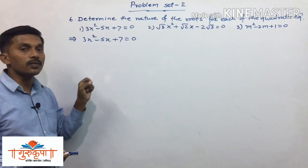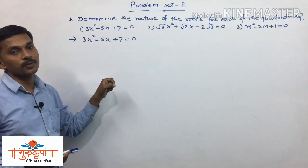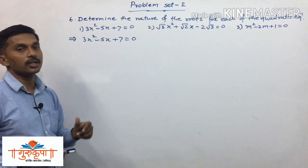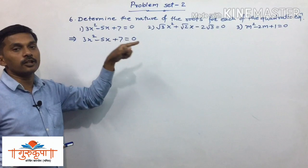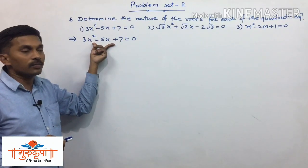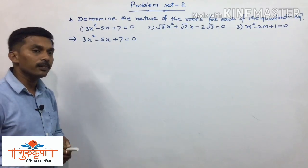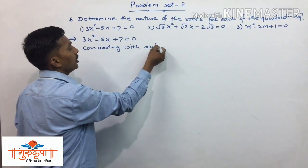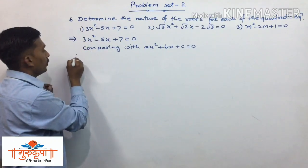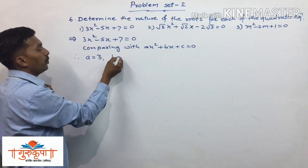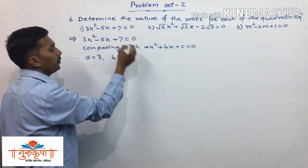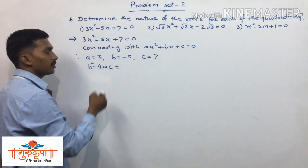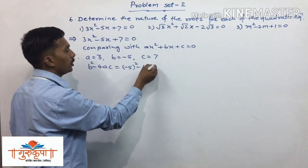For the first example, 3x squared minus 5x plus 7 equals 0, the equation is already in standard form. Comparing with ax squared plus bx plus c equals 0, we get a equals 3, b equals minus 5, and c equals 7. We compute the discriminant: b squared minus 4ac equals (minus 5) squared minus 4 times 3 times 7, which is 25 minus 84.